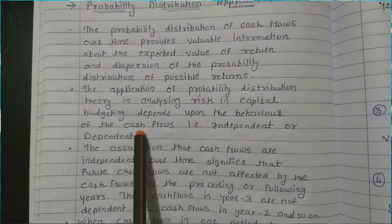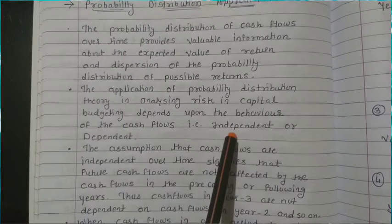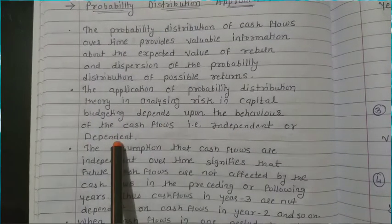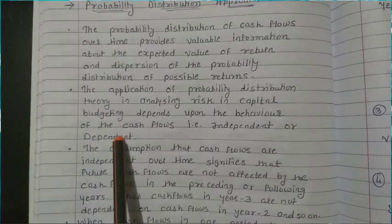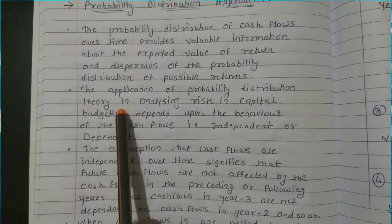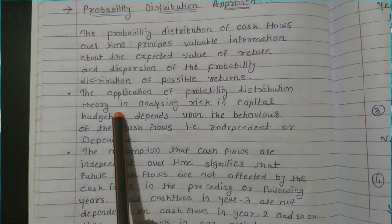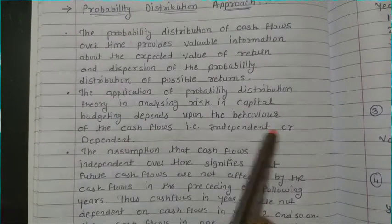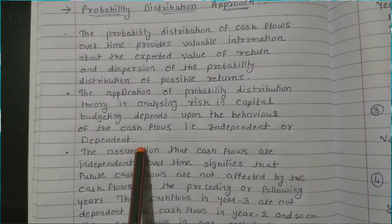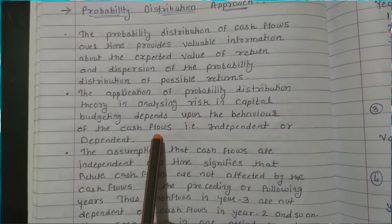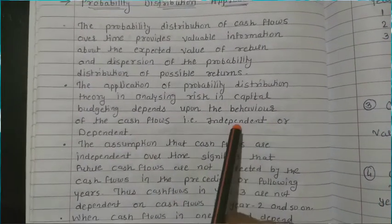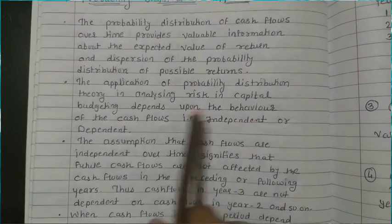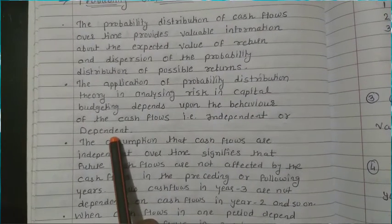The behavior of cash flows may be categorized into two types: cash flows that are independent and cash flows that are dependent. The risk analyzed with the help of the probability distribution method depends upon the behavior of the cash flow — whether independent or dependent.